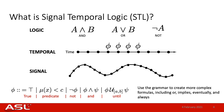STL is defined over predicates, which is the second term in the grammar, which says a function mu of x — where x is the state of the system — should be less than c, a scalar. If you're familiar with linear temporal logic, or LTL, then this looks very similar, except that STL is defined over predicates instead of atomic propositions, and the temporal operators have an associated time interval.